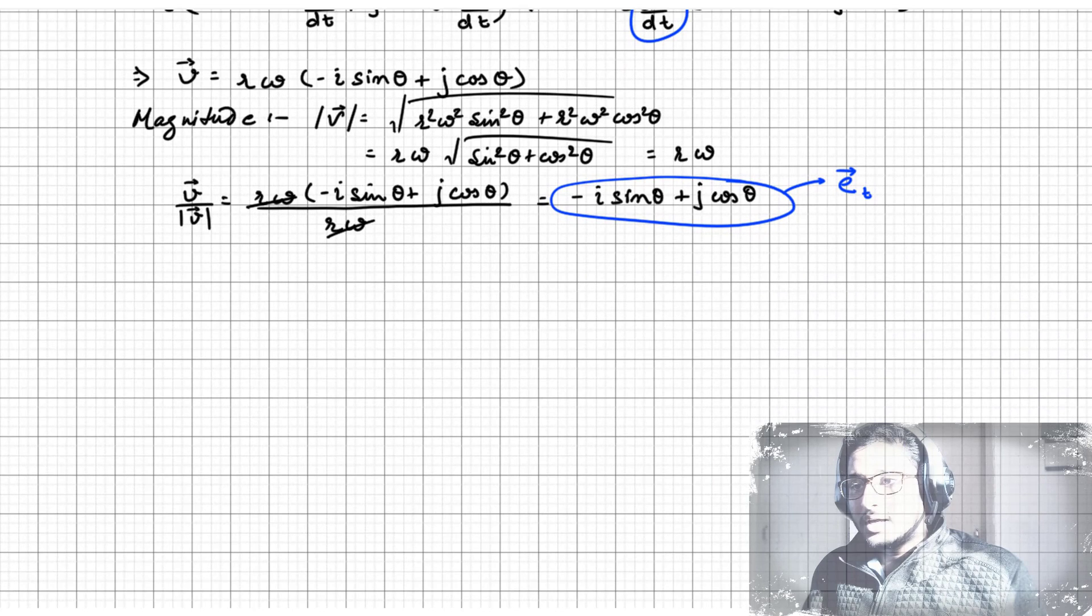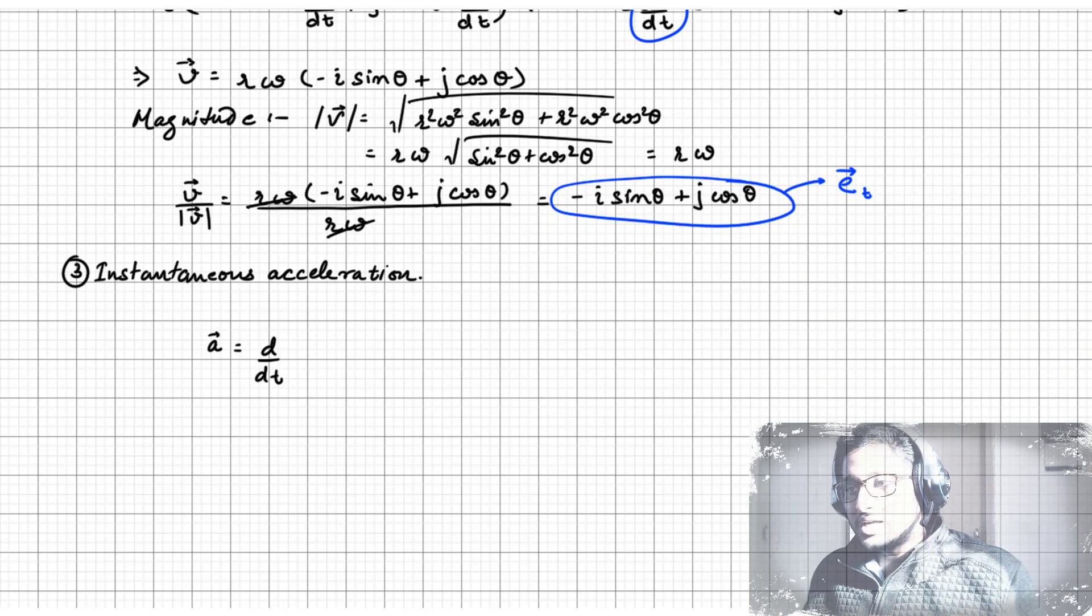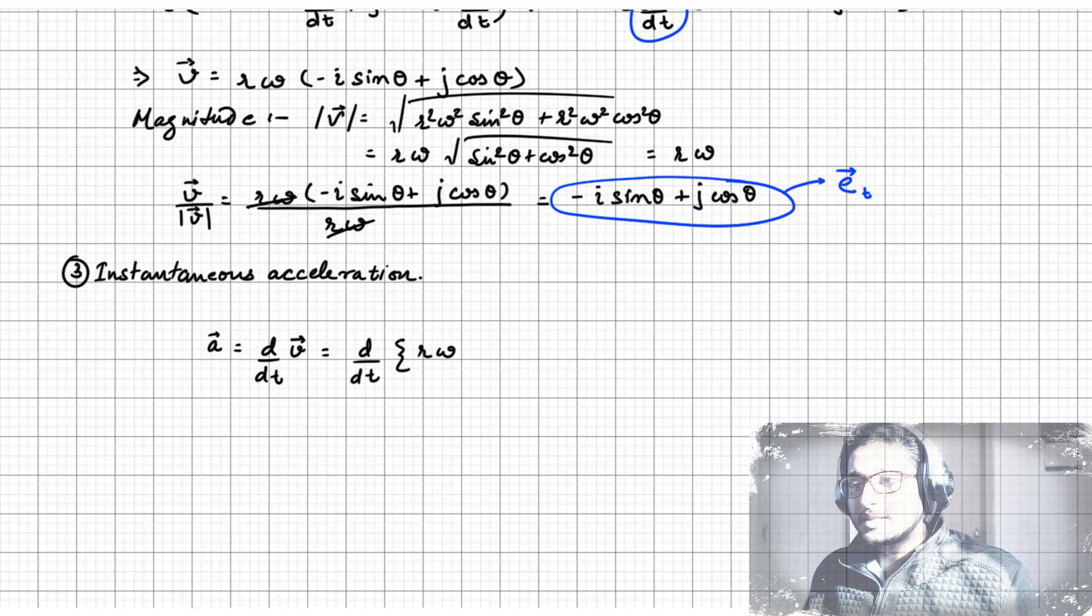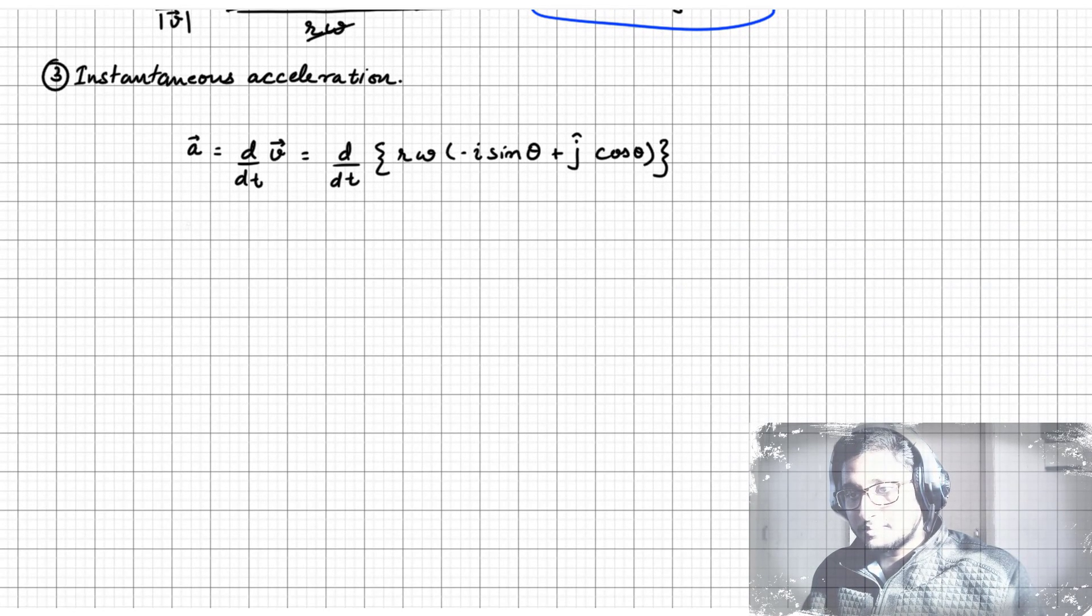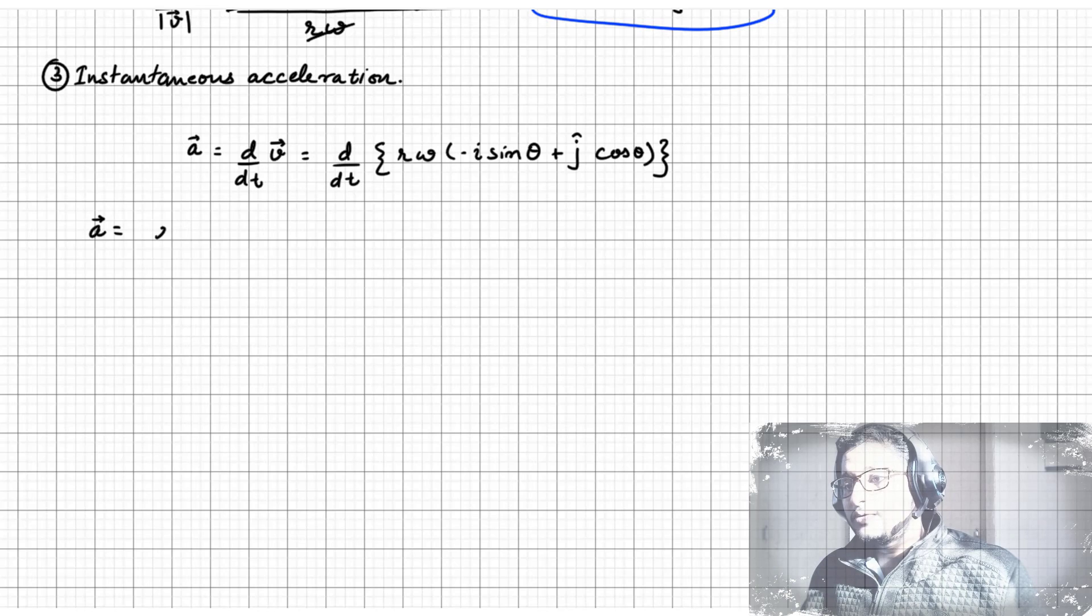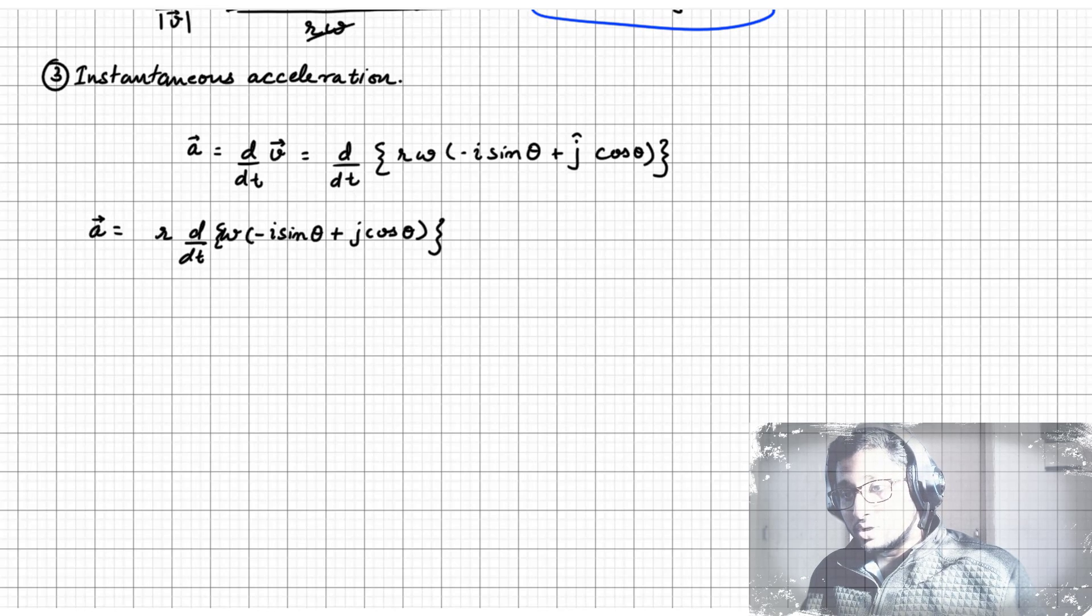The instantaneous acceleration is the differential of instantaneous velocity. To differentiate instantaneous velocity, we have to keep in mind that omega, the angular velocity, can also be a time-dependent quantity if there exists some angular acceleration. Here we have two time-dependent quantities: the angular velocity and the unit vector along the tangent, in product form. So we will apply the product rule for differentiation, considering omega as a and the tangential unit vector as b.